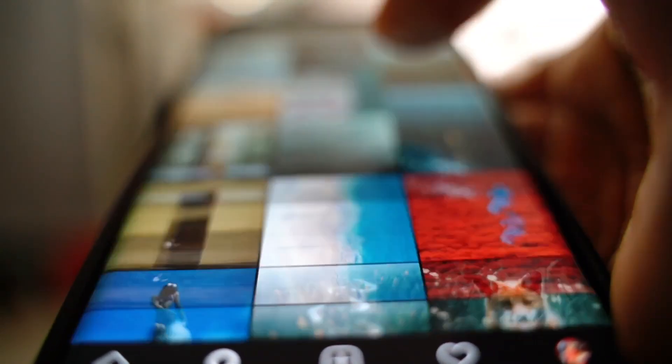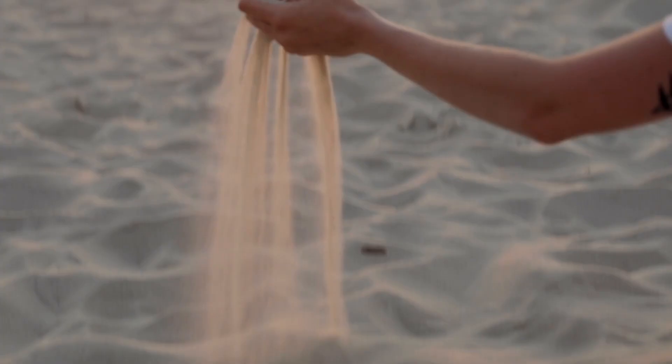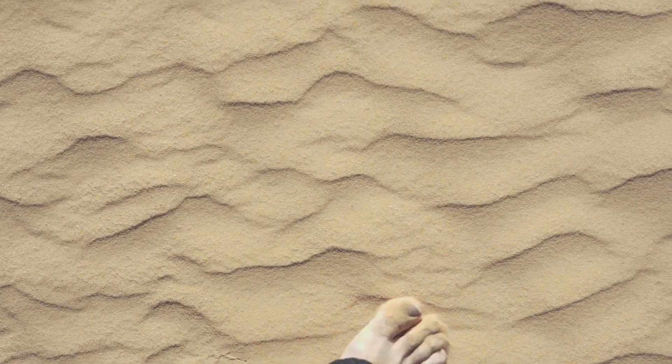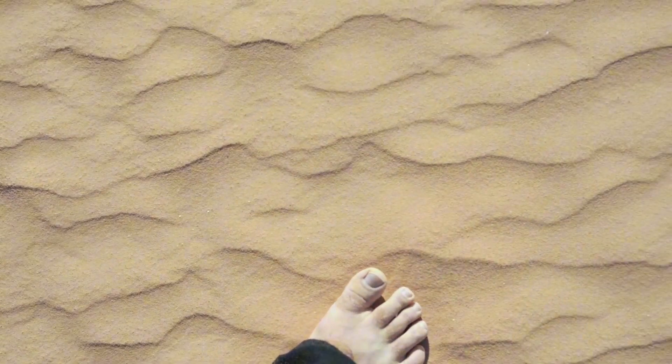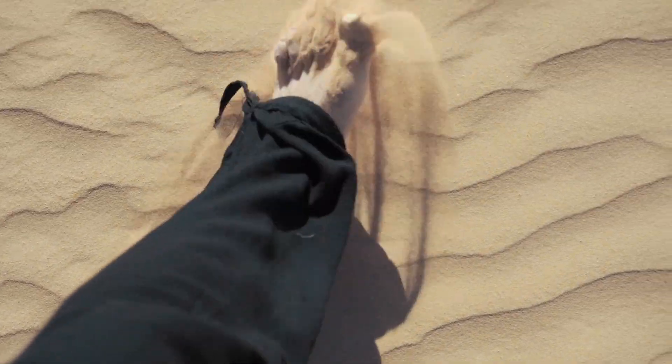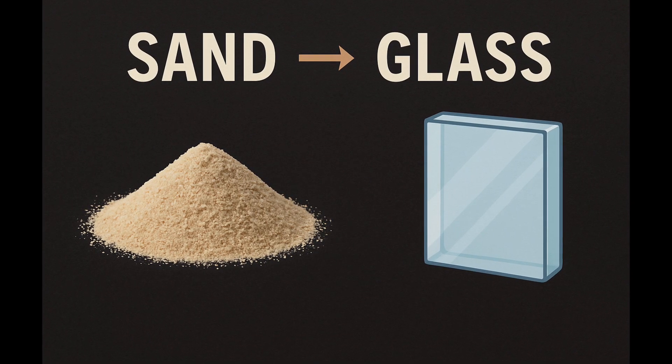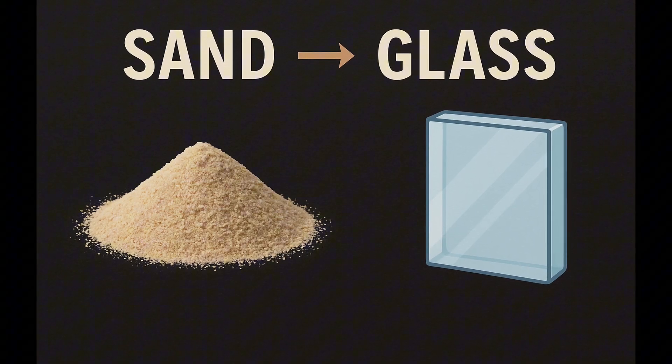Most people don't realize this, but the screen you're watching this on used to be nothing more than ordinary sand. Not special crystals, not exotic minerals, just sand, the same stuff that sticks to your feet at the beach. So how did humans figure out how to transform the most common material on Earth into one of the most important substances in history?